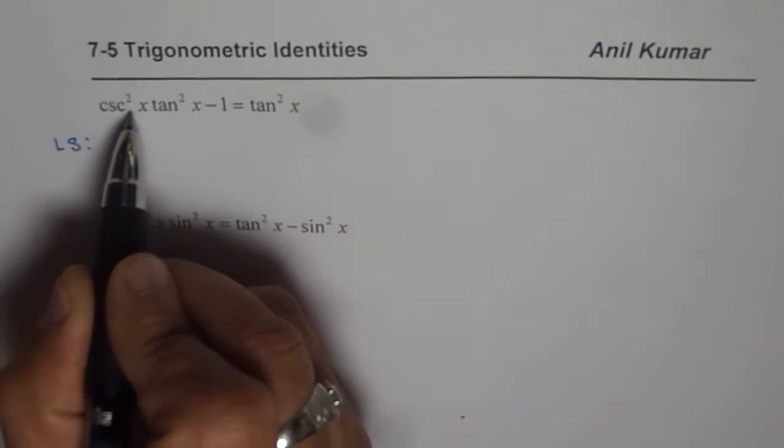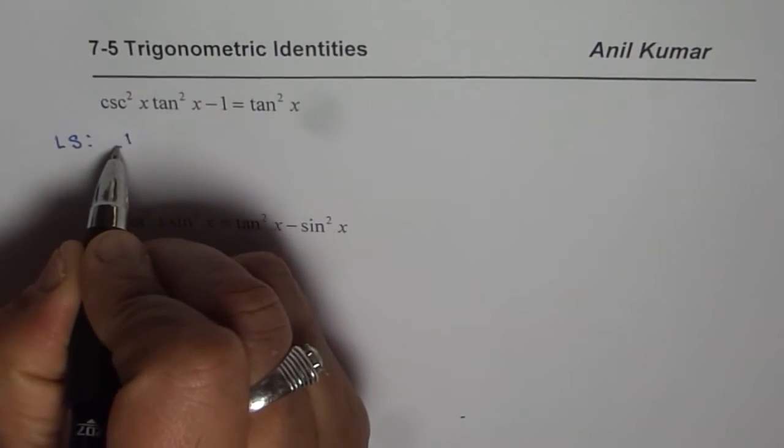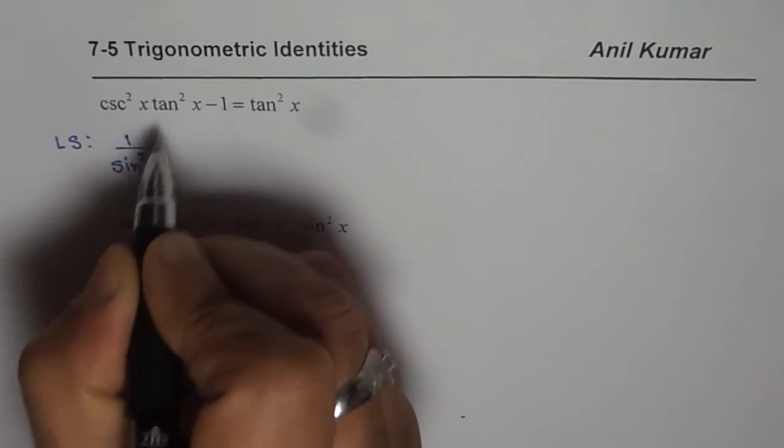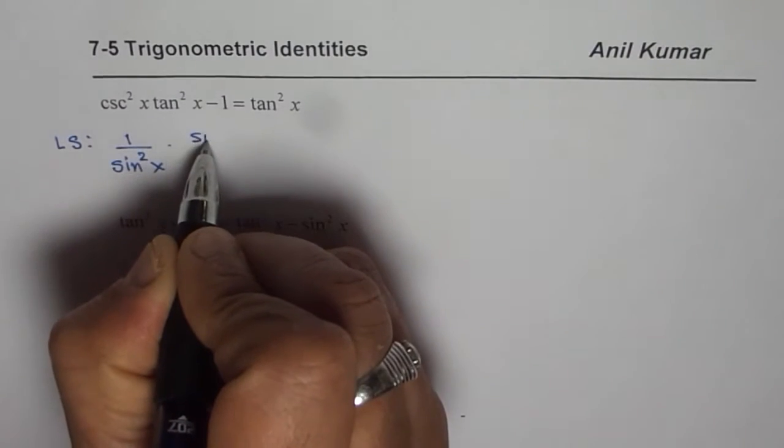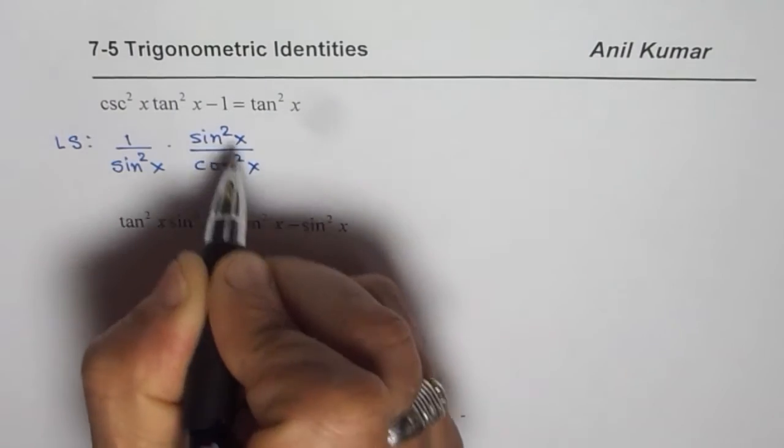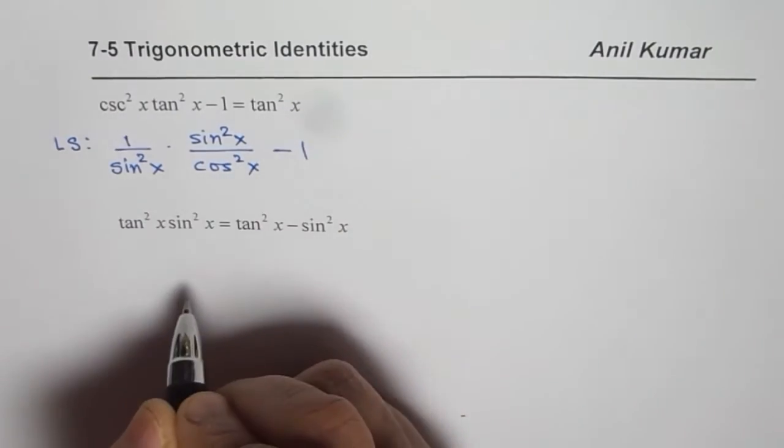Now we can write cosecant square x as 1 over sin square x. And tan square x can be written as sin square x over cos square x minus 1. So that is the left side.